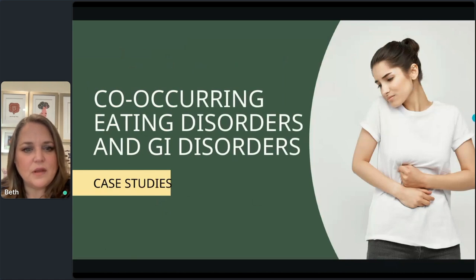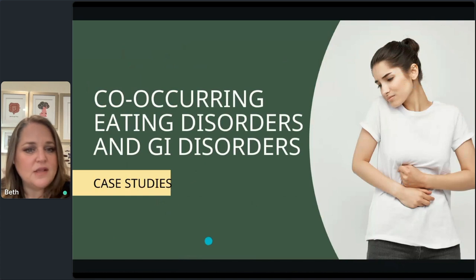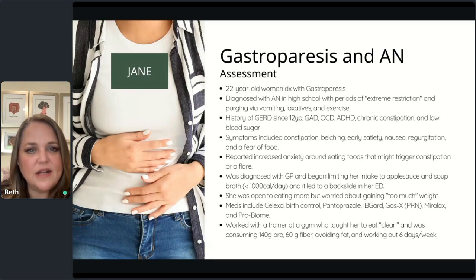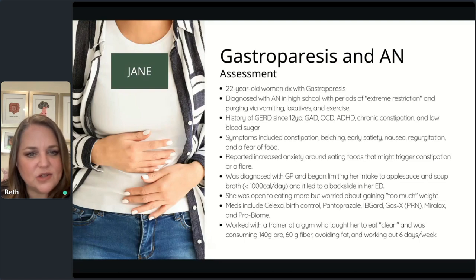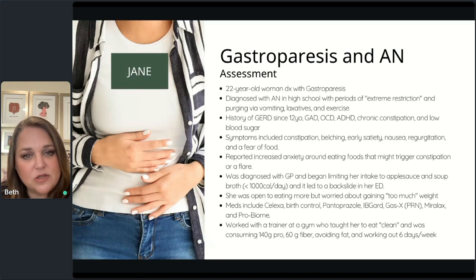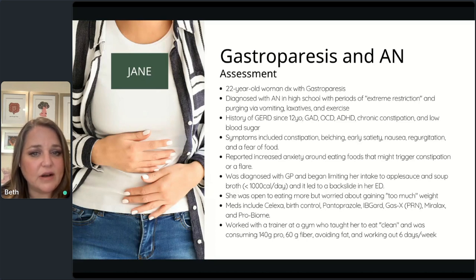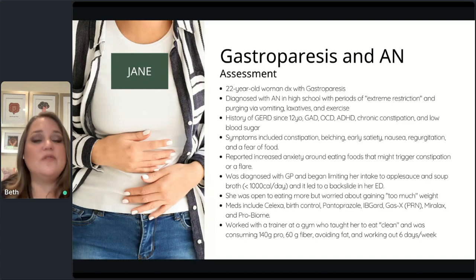Now let's look at two case studies — these are actual clients with changed names. Jane was a 22-year-old woman diagnosed with gastroparesis. She was diagnosed with anorexia in high school, with periods of extreme restriction and purging via vomiting, laxatives, and exercise. She has a history of reflux since age 12, and has been diagnosed with general anxiety disorder, OCD, ADHD, chronic constipation, and low blood sugar. Her symptoms included constipation, belching, early satiety, nausea, regurgitation, and a fear of food, with increased anxiety around eating foods that might trigger constipation or flare her gastroparesis.